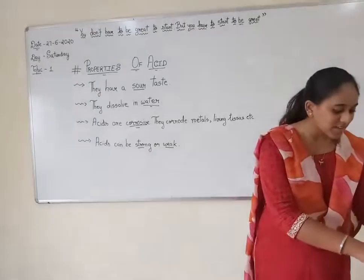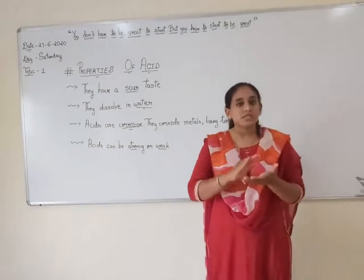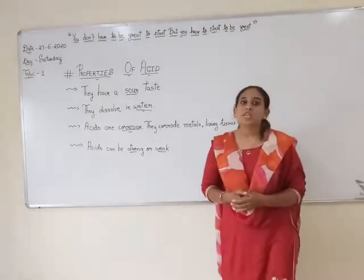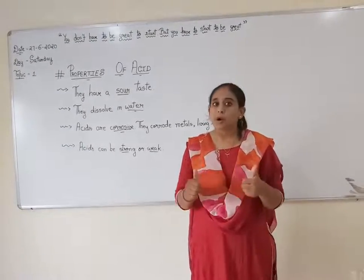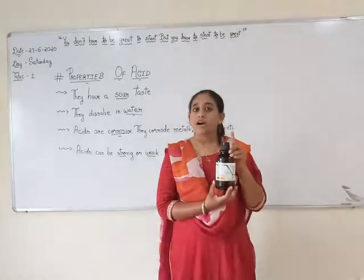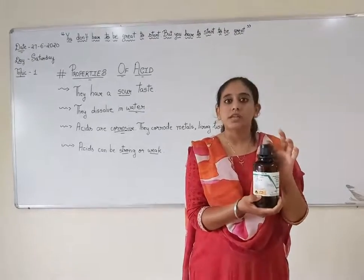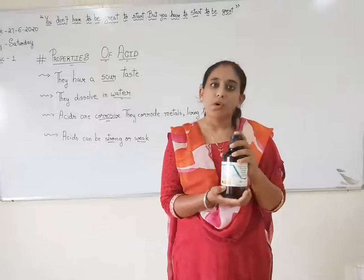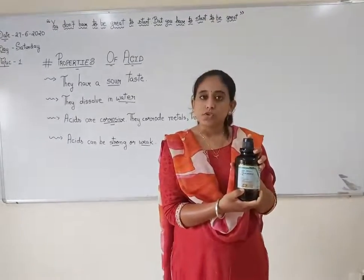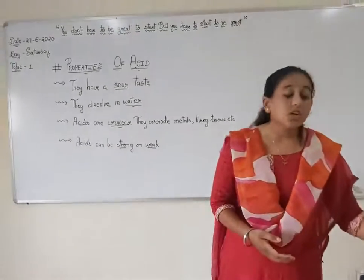The third property says that acids are corrosive. Corrosive specifically means it dissolves the surface — it can dissolve the surface of a metal, living tissue, cloth, and wood. If you check out the bottle of acetic acid, you will definitely find a symbol showing that the liquid inside is corrosive. Similarly, other bottles of acid also carry a similar warning sign indicating the liquid is corrosive in nature.